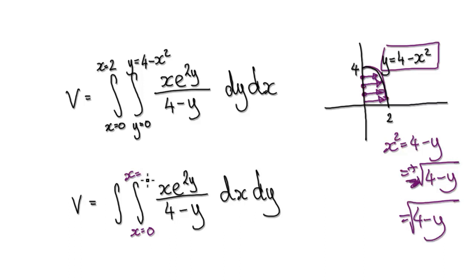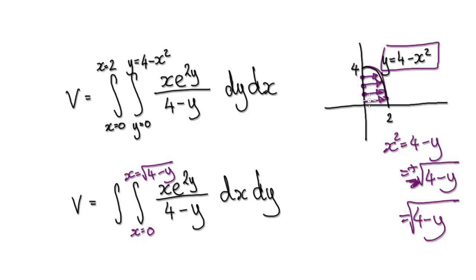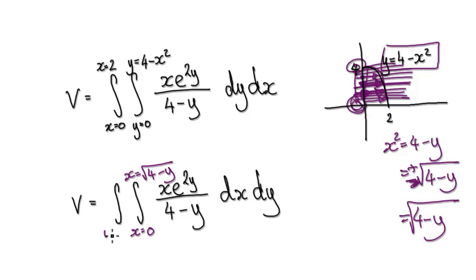So we integrate from x = 0 to x = √(4 − y). Then we scan in the y-direction from 0 to 4, since the region spans y from 0 to 4. This gives us the switched form of the double integral.